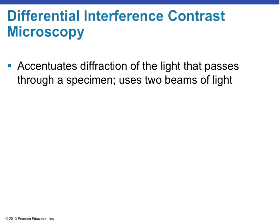Differential interference contrast microscopy, or DIC — keep in mind that bright field, dark field, phase contrast, and DIC are all forms of light microscopes, but they differ in how the light is used. With DIC, we use two beams of light instead of one, which gives us a much deeper, almost three-dimensional view. We can see whether a structure is in front of or behind another structure using those two beams.